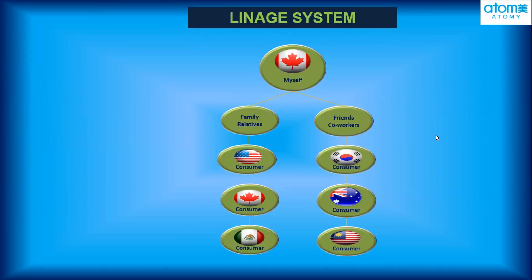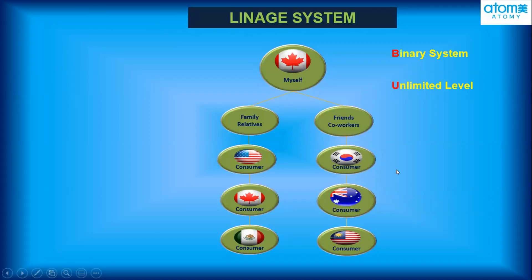In the Atomy business, the binary system means two legs — one left and one right. What else? The other feature of our lineage system is that it is unlimited. We can register as many as we can, and the people under us will also register their friends, family, and co-workers under them. It is unlimited leverage, and it is infinite leverage — meaning we can also benefit from the points coming from anyone under us.